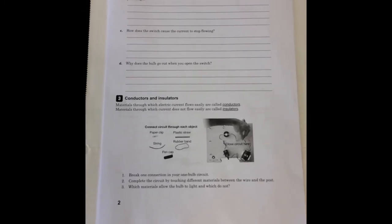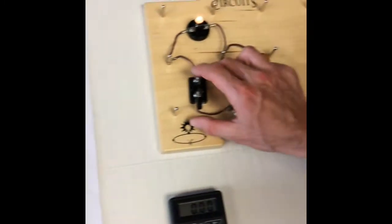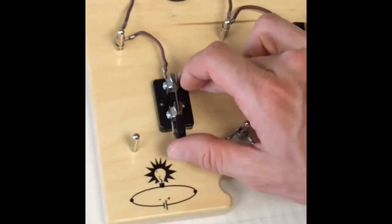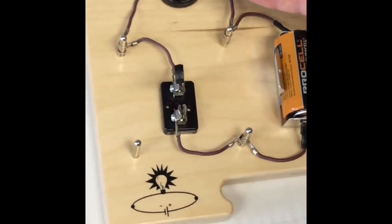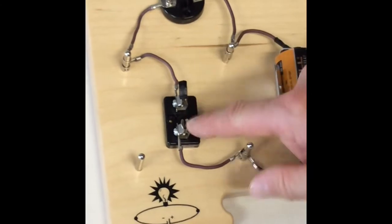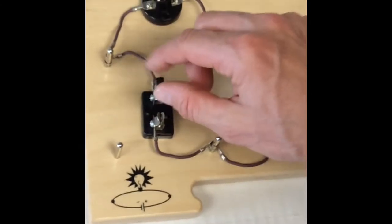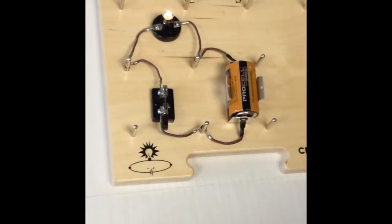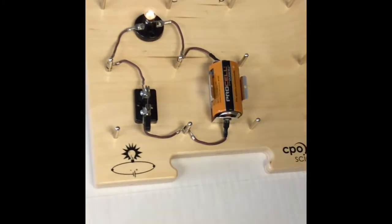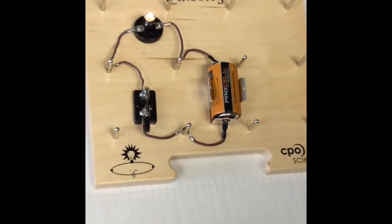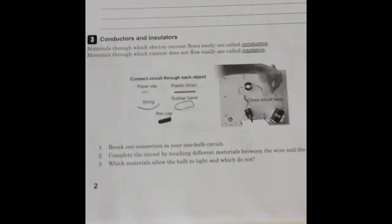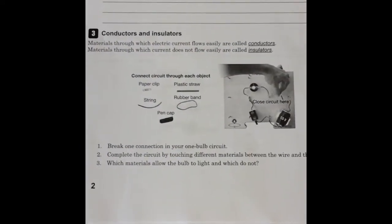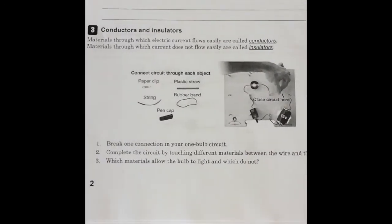How does the switch cause the current to stop? When we open up our switch here, you'll see our current has stopped flowing. It is open. That brings us to our next part, which is conductors and insulators. A conductor is a material through which electric current flows easily, and an insulator, it does not flow easily. It resists that flow.